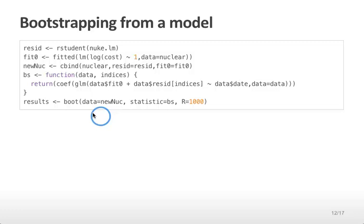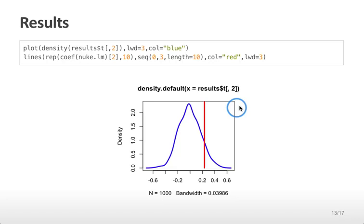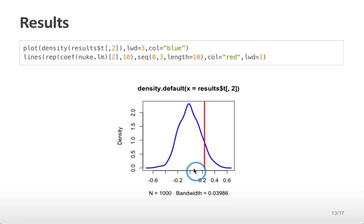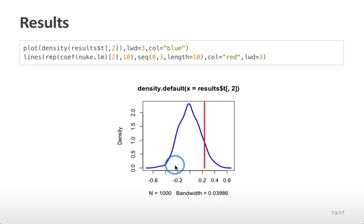We pass to the boot function our new nuke dataset — including the residuals and fit zero so they can be found by the BS function — the BS function, and the number of replications, in this case 1,000. We can then plot the distribution of coefficients we would get if there was no relationship between cost and date. In this case the distribution is centered on zero, as we would expect. The observed coefficient estimated from the real data is indicated by the red line. We could calculate an empirical p-value by summing the area to the right of this red line underneath the distribution. We could calculate a two-sided p-value by reflecting this line around zero and calculating the area on that side of the curve as well.